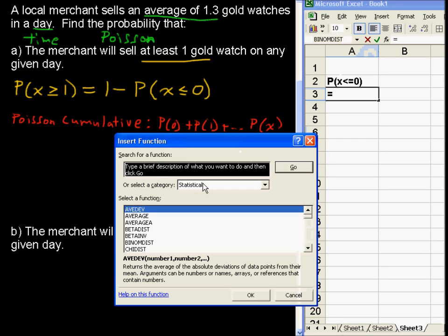It should be spelled the same way. If it's not, it'll be very close. So you can find this Poisson under the category of statistical functions. We'll go down to Poisson, let's go down to the P, and there it is.